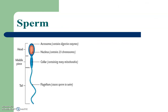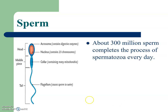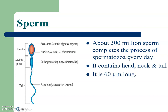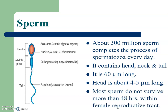Sperm contains 3 major portions: head, middle piece, and tail. There are about 300 million sperms that complete spermatogenesis every day. A sperm is about 60 micrometers long, and the head is about 4 to 5 micrometers long. Most sperms do not survive more than 48 hours within the female reproductive system. In the diagram, the head contains the acrosome which contains digestive enzymes, as well as the nucleus. The middle portion contains mitochondria, and the tail region, also called the flagella, causes the sperm to swim and enables its motility.